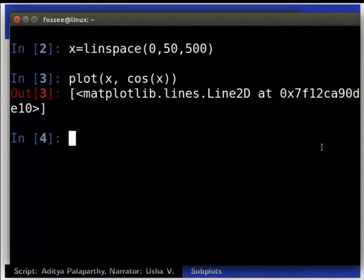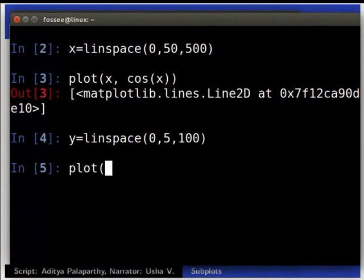Type y is equal to linspace inside brackets 0,5,100. Plot inside brackets y comma y square.